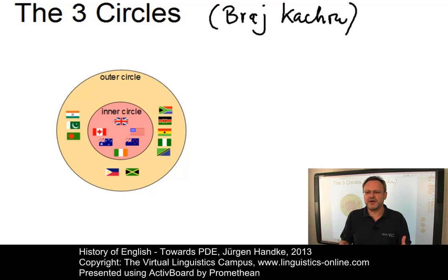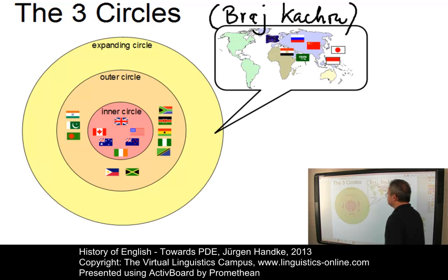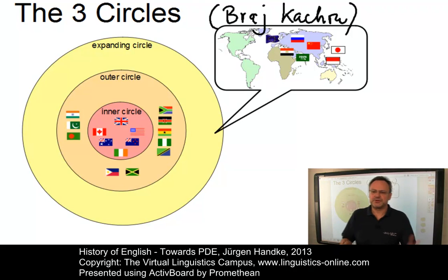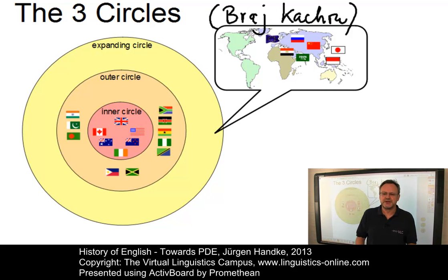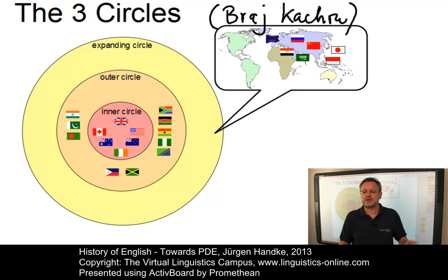A total of 400 million speakers belong to the outer circle — the circle that defines English as a second or official language. The countries in the expanding circle did not institutionalize English as an official language but recognized the importance of English as a foreign language. These countries include Israel, Japan, China, Egypt, Korea, Nepal, Russia, Taiwan, Indonesia, Zimbabwe, Saudi Arabia, and of course Western Europe and the Caribbean and the South Asian subcontinent, with more than one billion speakers.